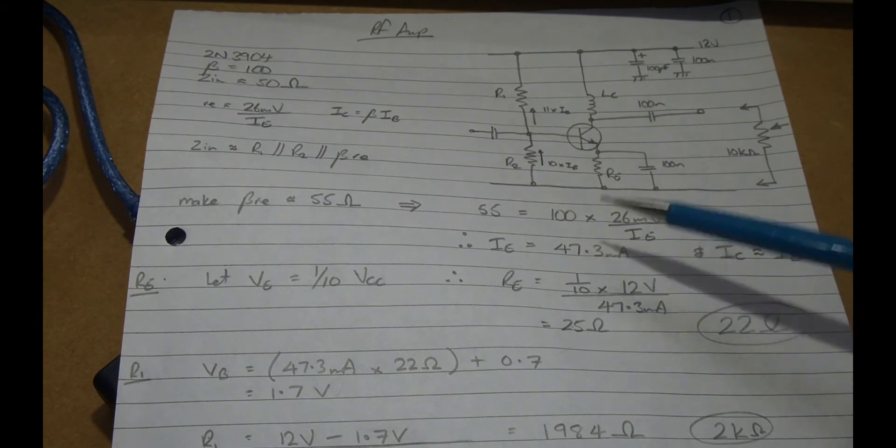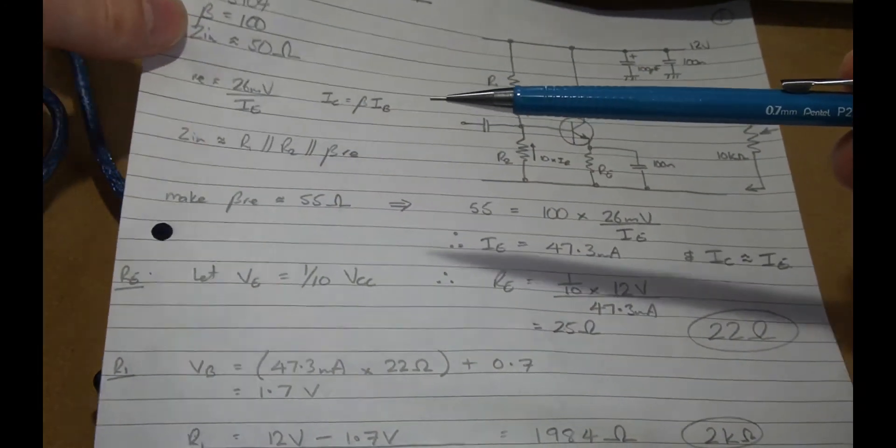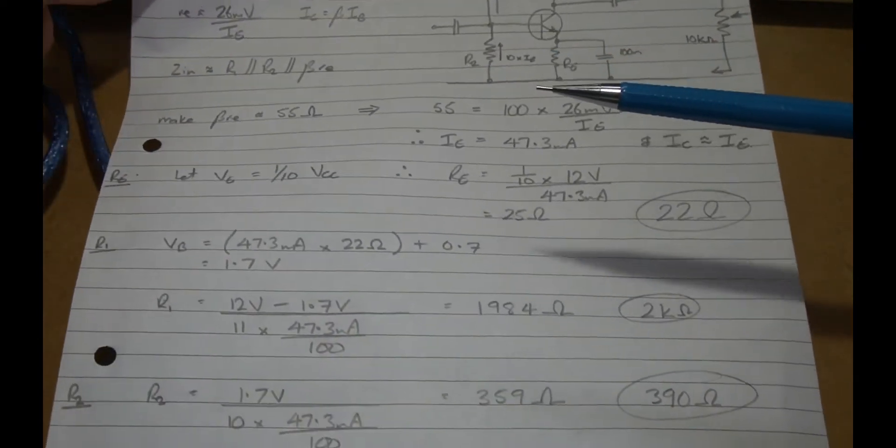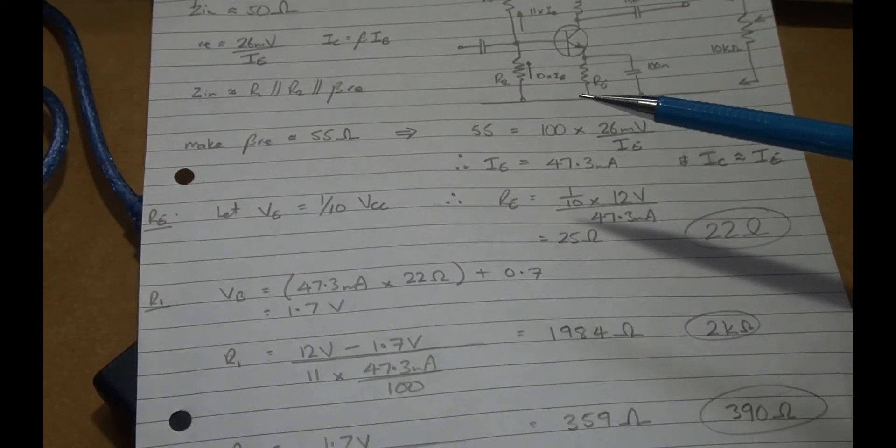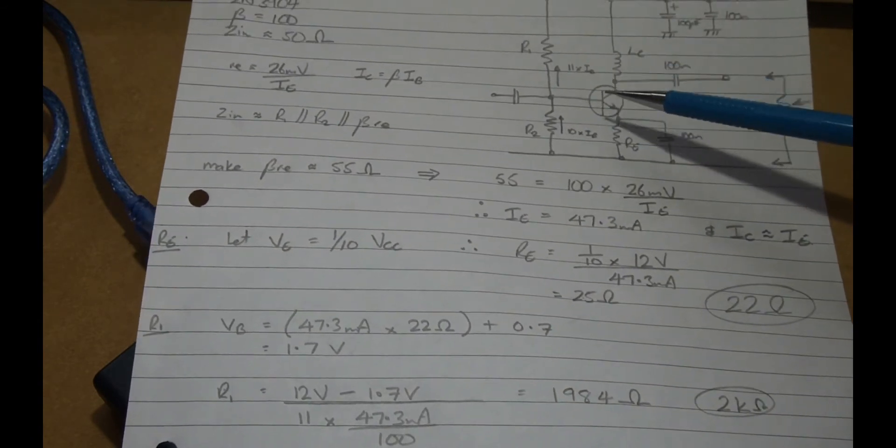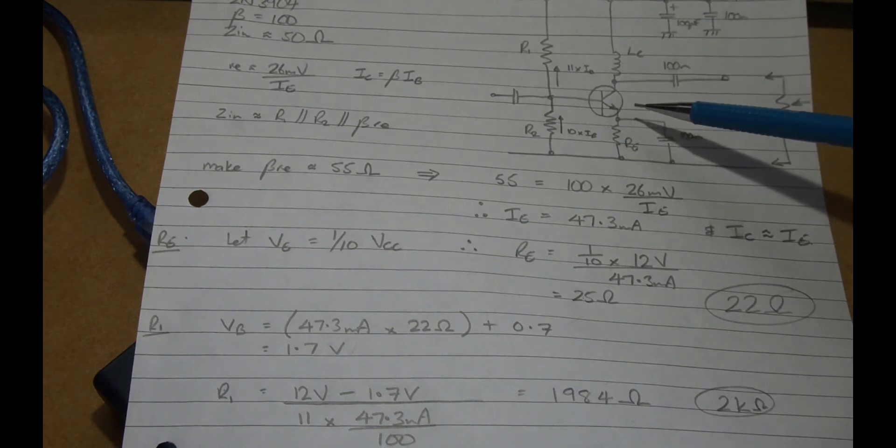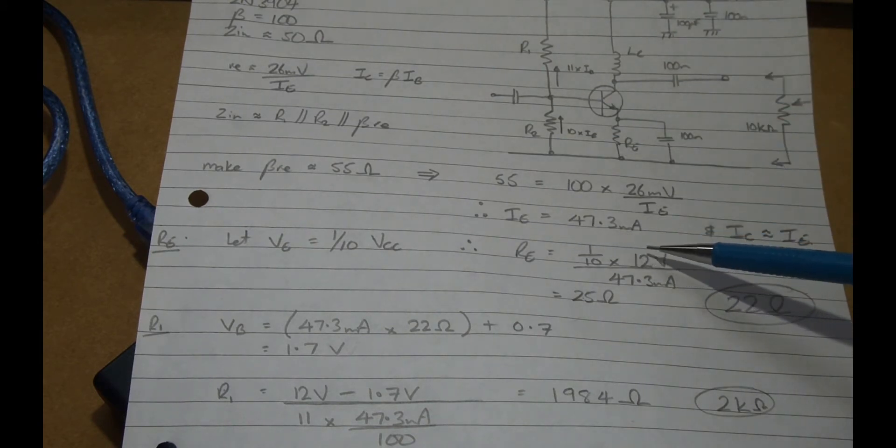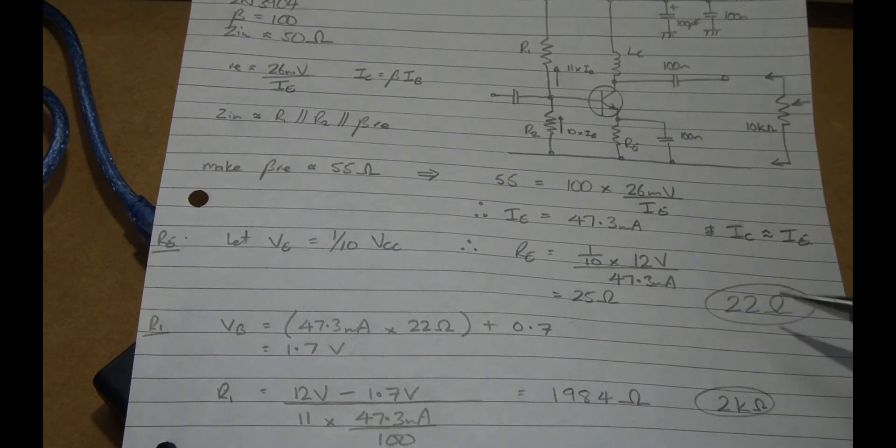So having got that, we can now look at determining a value for Re. And what we'll do there is as a rule of thumb we'll set the emitter voltage to be a tenth of Vcc. So if it's 12 volts it'll be 1.2 volts. And then we can say 1.2 volts divided by my 47 milliamps going through it comes out to be 25 ohms. So we'll just use 22 ohms out of the junk box.